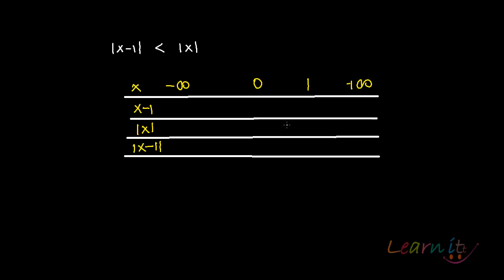This will make our case a bit more valid. When it comes to |x|, for negative x the value will be minus x everywhere. Below 0 there should be 0, and then you will have positive x everywhere.